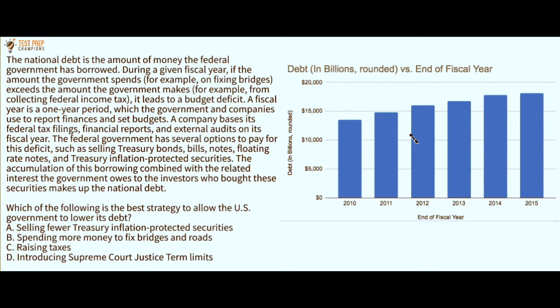A company bases its federal tax filings, financial reports, and external audits on its fiscal year. The federal government has several options to pay for this deficit, such as selling treasury bonds, bills, notes, floating rate notes, and treasury inflation-protected securities. The accumulation of this borrowing, combined with the related interest the government owes to investors who bought these securities, makes up the national debt.